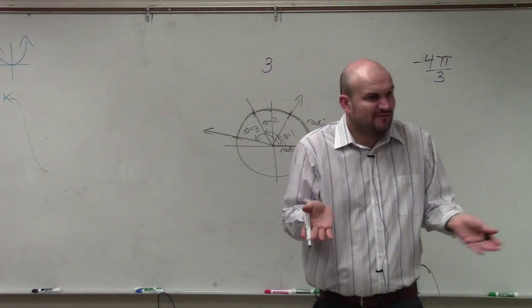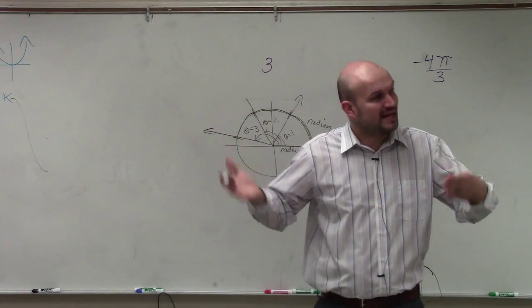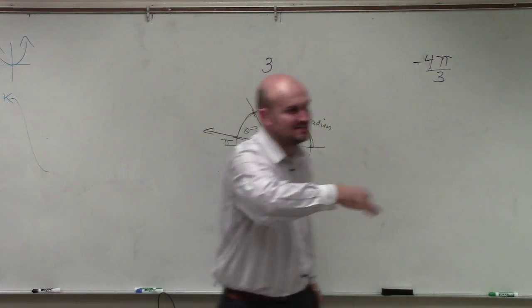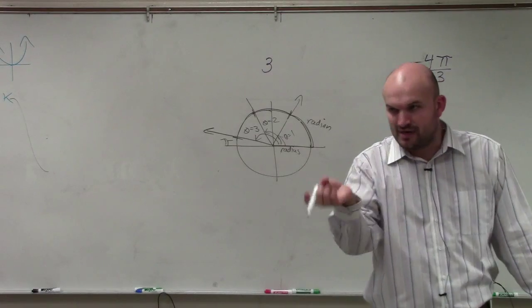Because where did pi come from? Pi is the number of radians that goes around a circle, which is 3.14159 and so on. It's not an exact vector, right? It's irrational.